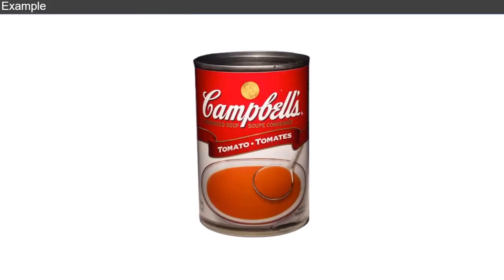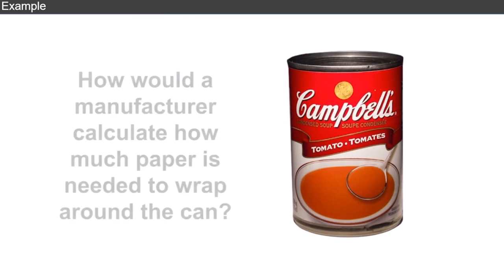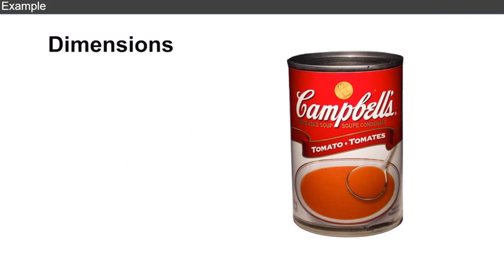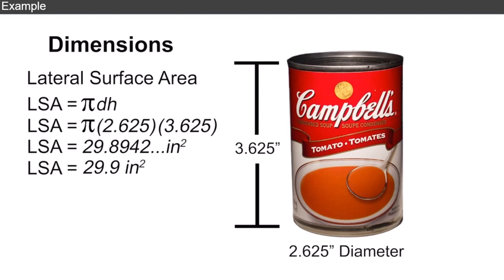We'll start with the soup can. How would a manufacturer calculate how much paper is needed to wrap around the can? We'll start with the dimensions. The soup can is 3.625 inches tall and 2.625 inches in diameter. Since the label doesn't cover the top or the bottom, we only need to calculate the lateral surface area. Using the lateral surface area formula, we multiply pi times the diameter times the height, then round our answer to the tenths place.